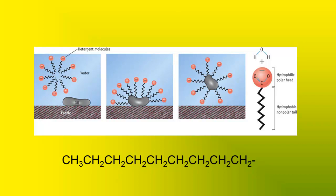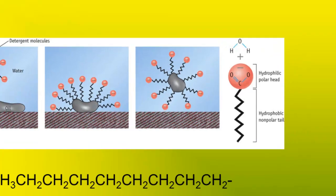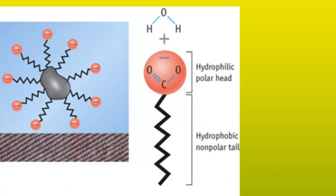This cartoon shows how soap cleans. A soap molecule can be thought of as a small piece of string. One end of the molecule is ionic, the rest of the molecule to the other end is nonpolar. The ionic end is called the hydrophilic head, and the rest of the molecule is called the hydrophobic nonpolar tail.